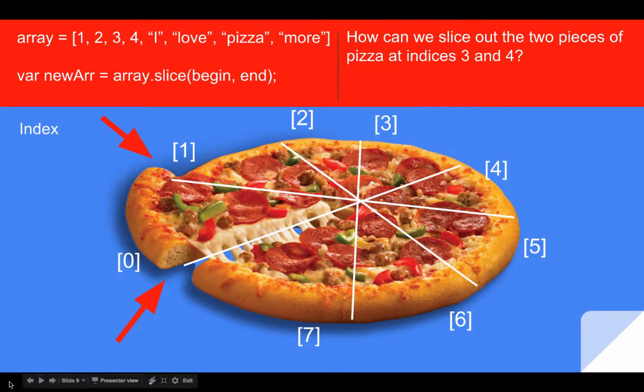So how could we slice out the two pieces of pizza at indices three and four? What would our slice method look like if we wanted to take out these two slices of pizza? Imagine the pizza arrives, you're starving, you're not a big fan of onions, and you spot two slices, this one and this one with almost no onions on it. So you say, ah, I would like to take out those two slices of pizza. How would we do this to remove these two elements at indices three and four? Take a moment and see if you can type out what the slice method would look like.